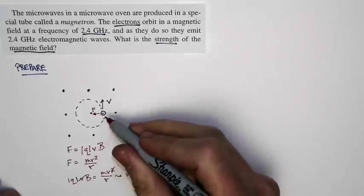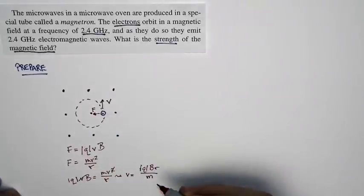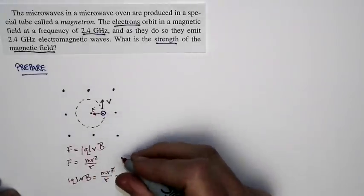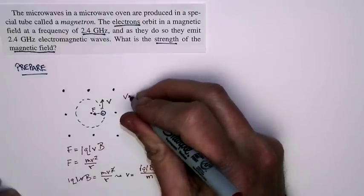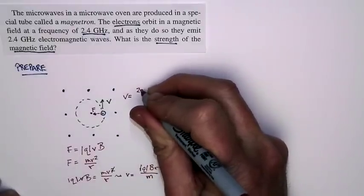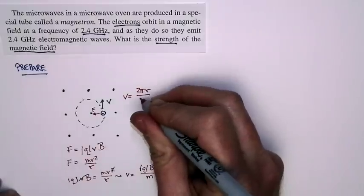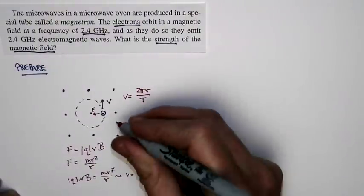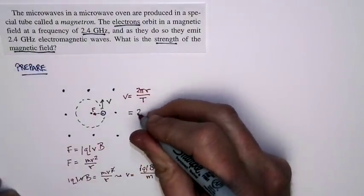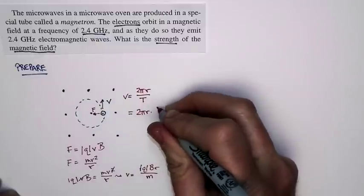Now we also know this: the particle is going in a circle. And the speed at which it's going in a circle is just equal to distance, the circumference of the circle, 2 pi r divided by the time to make one orbit, which is the period. Well, the period is just one over the frequency. So the speed is 2 pi r times f.